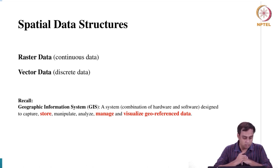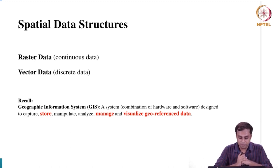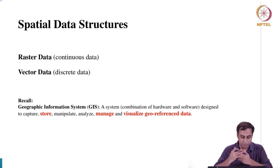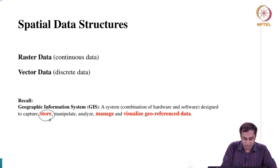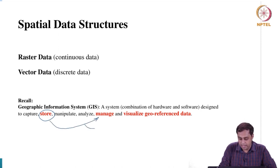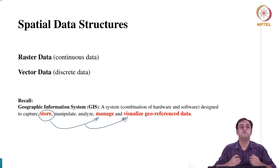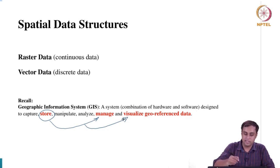I want you to recall the definition we gave when we talked about the geographic information system — a system designed to capture, store, manipulate, analyze, manage and visualize georeferenced data. Data structures start right at the place where we have to store data, and then they have a fundamentally important role in how the data are managed and how we can visualize this data in our own work. So let us get started.